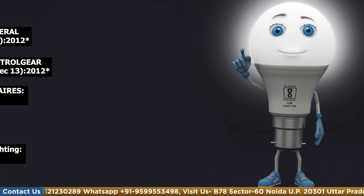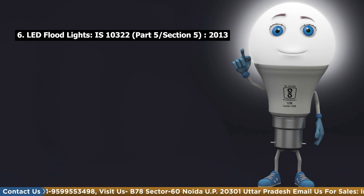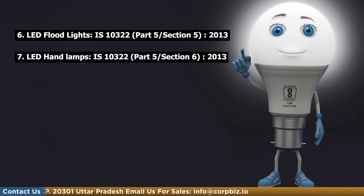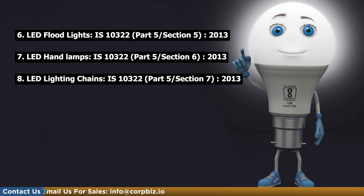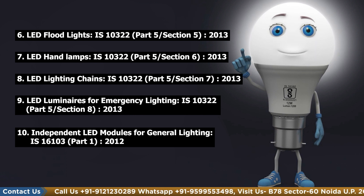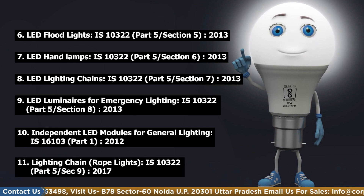Further types include: LED Luminaires for Road and Street Light under IS 10322 Part 5 Section 3 2012; LED Flood Light under IS 10322 Part 5 Section 2 2013; LED Lighting Chain under IS 10322 Part 5 Section 3 2013; LED Luminaires for Emergency Lighting under IS 10322 Part 5 Section 8 2013; Independent LED Module for General Lighting under IS 16103 Part 1 2012; and Lighting Chain Rope Light under IS 10322 Part 5 Section 9 2017. To get LEDs registered in BIS, you need to follow the procedure with their guidelines.